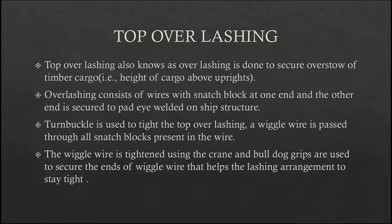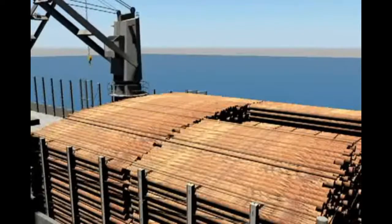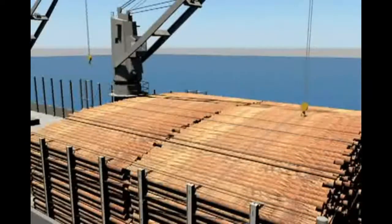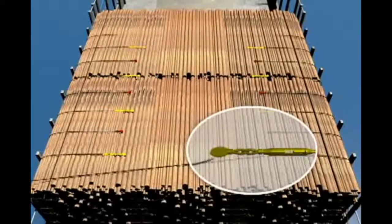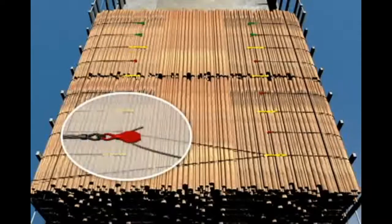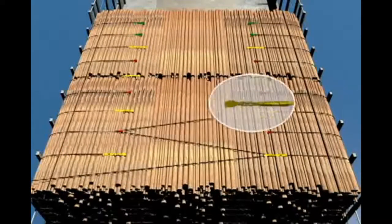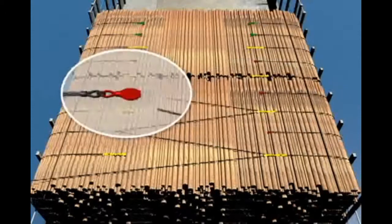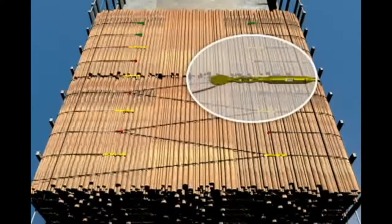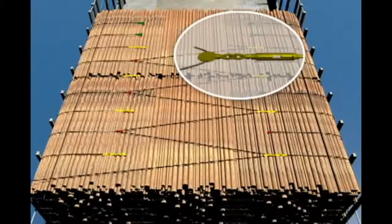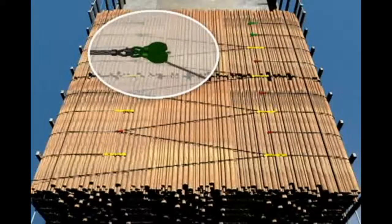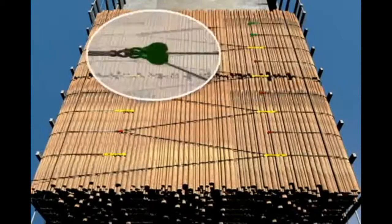Top over lashing is done to secure overstow of timber cargo. Overstow means cargo that is loaded above the height of uprights. Wires with snatch blocks at one end and the other end secured to pad eyes welded on the deck stringer plate are used. Turnbuckles are used to tighten the top over lashing, and a wiggle wire is passed through all the snatch blocks present in the wire rope.